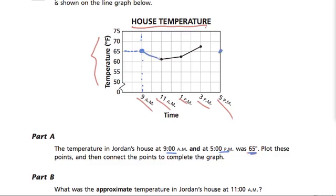Now we just connect the dots. You would use a ruler to do that. Part B: What was the approximate temperature in Jordan's house at 11 a.m.? Here's 11 a.m. Look up. There's the point. Notice it's a little bit above 60.